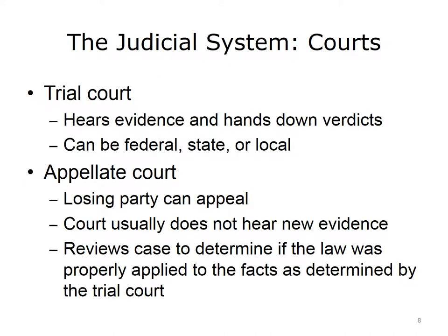There are two kinds of courts within most legal systems: trial courts and appellate courts. The trial court hears evidence in a dispute, decides which party is telling the truth, and decides the outcome by determining how the law applies to the facts of the specific case. After the trial court makes its decision, the losing party has the right to appeal to an appellate court. An appeals court consists of a panel of judges — for example, a panel of three judges is common in the federal courts of appeals. In most cases, appellate judges do not hear witnesses or consider new evidence. The role of a court of appeals is to decide whether the trial court properly applied the law to the facts of the case.